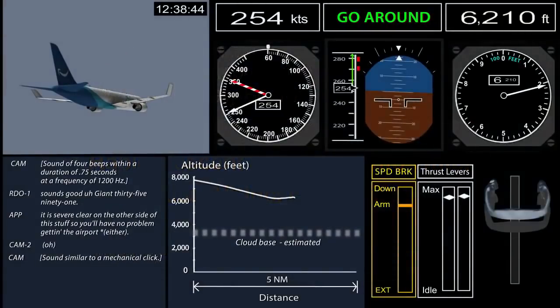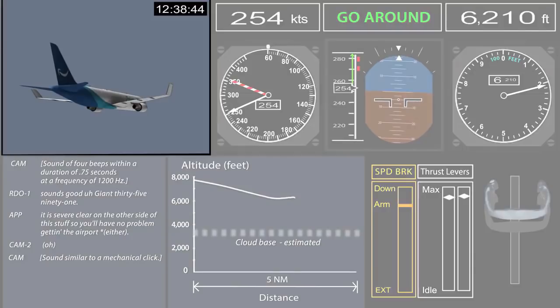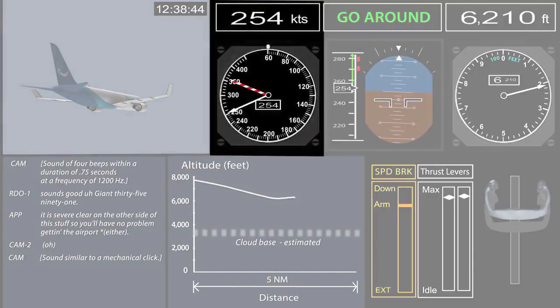We will show a short animation depicting the sequence of events. Note that the depictions are not necessarily identical to the airplane displays. In this still frame, you can see a simulated external view of the airplane and the analog airspeed indicator with digits to aid clarity.